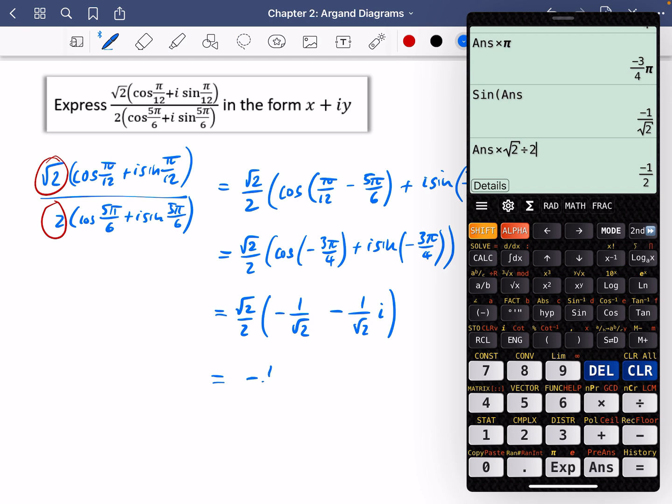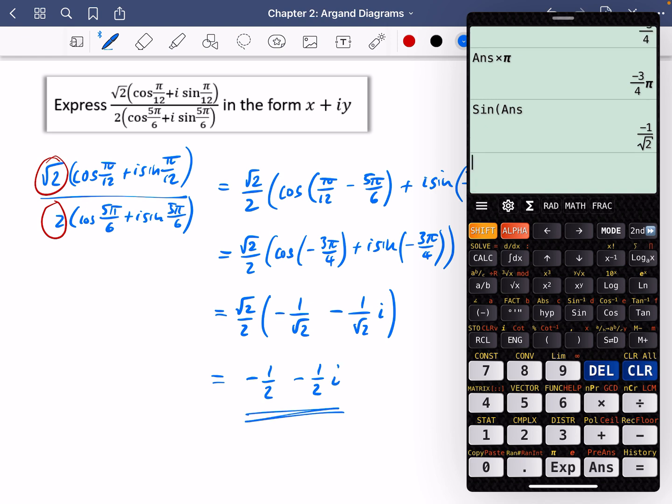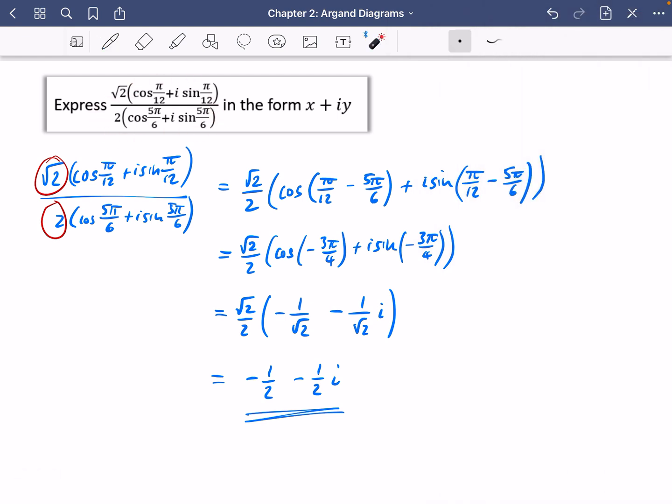So again, our final answer is -1/2 - 1/2 i. If you wanted to, you could verify this by actually probably typing this whole thing into the calculator. But we want to see it in this way of just checking that we've understood that we are dividing the modulus and subtracting the arguments. Before you get going with the next exercise, please watch my next video because I'm going to just point out one thing that's really important to help you manipulate a particular form of the modulus argument form of a complex number.